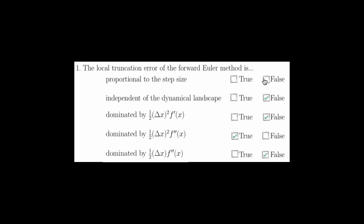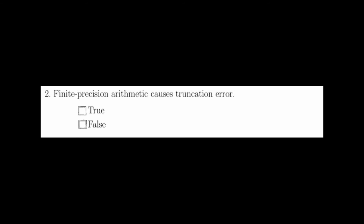Question two asks whether finite precision arithmetic causes truncation error, and this is false. Finite precision arithmetic causes round-off or cut-off error. Truncation error comes about by how we approximate the solution using a Taylor series, and which term of the Taylor series we truncate.